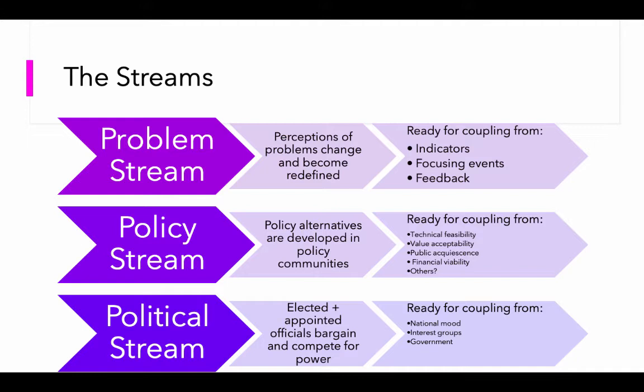Then we have focusing events, which are sudden, actually quite rare, and at least potentially harmful — meaning there is potential for harm to human life — and are known to both policymakers and the public. These are things that focus our attention on an issue. And then finally, feedback — there may be feedback within or about existing programs and policies that directs attention to specific conditions. For example, if we find out a policy is not working well and there is concern about this, that feedback may become important. When another stream becomes ready, if you have things bringing a problem to the forefront, the problem stream becomes ready for coupling.